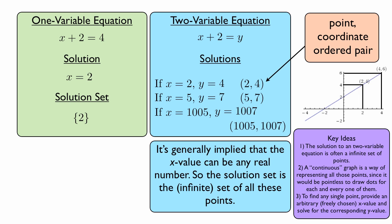A continuous graph is a way of representing all these points, since it would be pointless, no pun intended, to draw dots for each and every one of them.